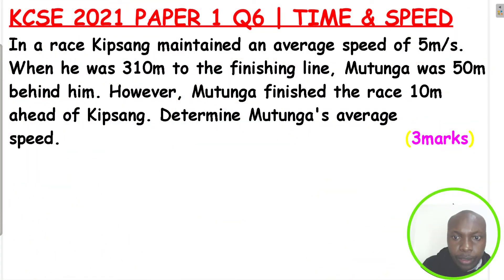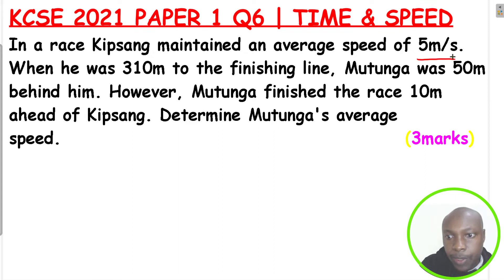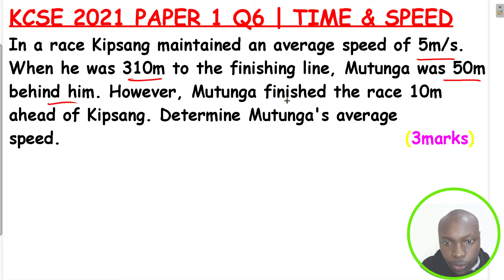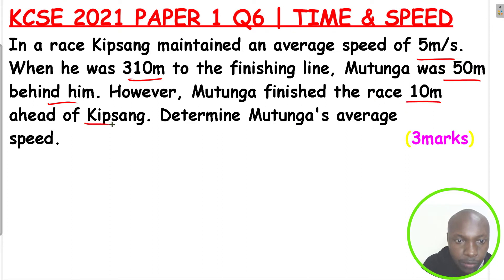We are given that Kip Sang maintained an average speed of 5 meters per second. When he was at 310 meters to the finishing line, Mutunga was 50 meters behind him. Then, at the end, Mutunga finished the race 10 meters ahead of Kip Sang.